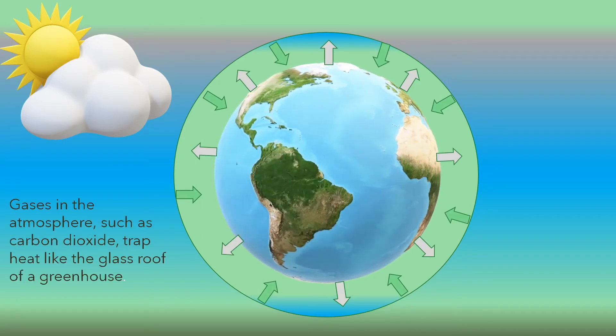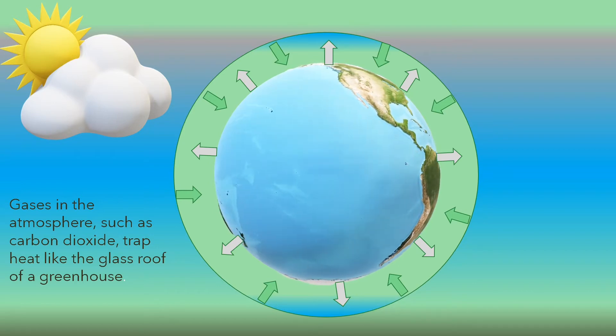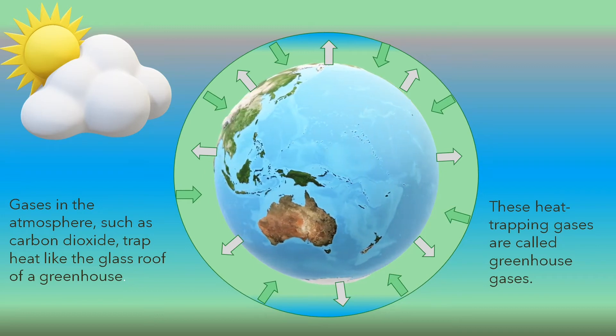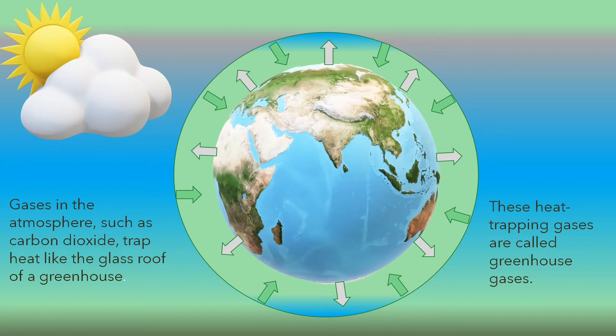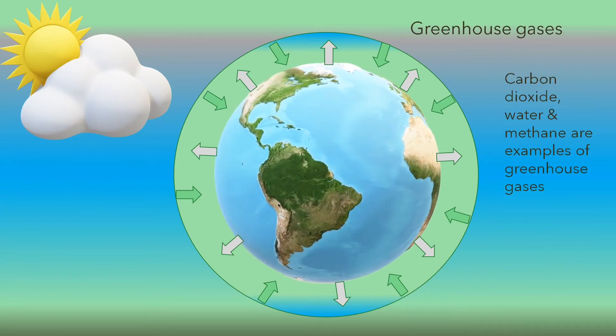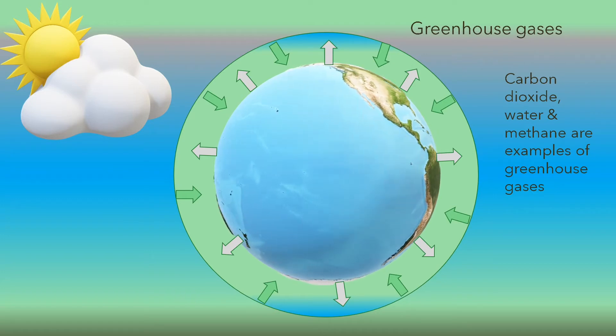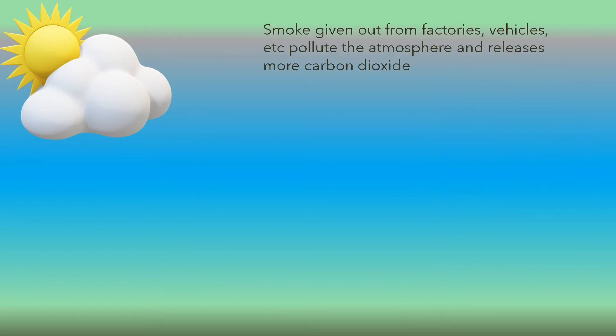Gases in the atmosphere, such as carbon dioxide, trap heat like the glass roof of a greenhouse. These heat-trapping gases are called greenhouse gases. Carbon dioxide, water and methane are examples of greenhouse gases.